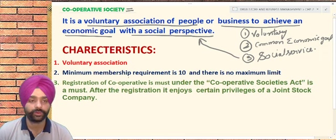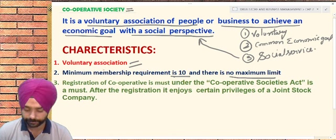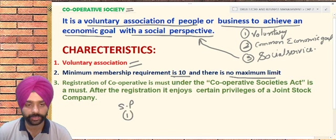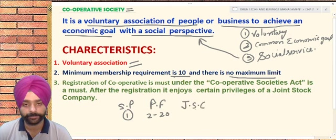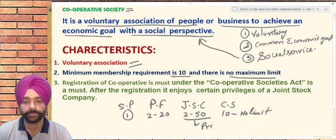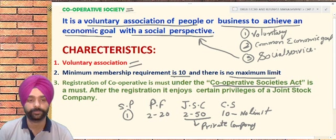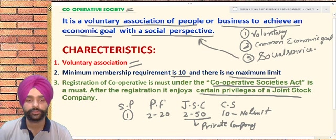The characteristics of a cooperative society: it is a voluntary organization, with a minimum membership of 10 and no maximum limit. Let us revise the membership numbers for all forms: sole proprietorship has 1 owner; partnership firm is 2 to 20; joint stock company — private company — is 2 to 50; and a cooperative society is 10 to no limit. Registration of cooperatives is mandatory under the Cooperative Societies Act, after which it enjoys certain privileges similar to joint stock companies.